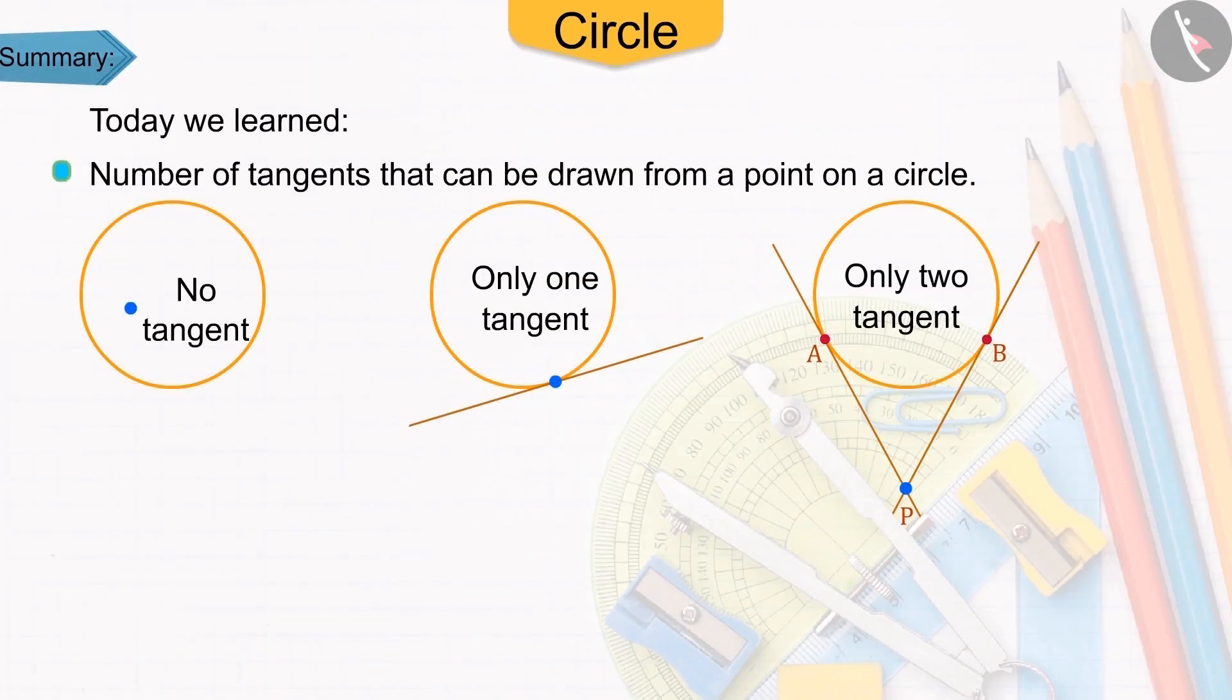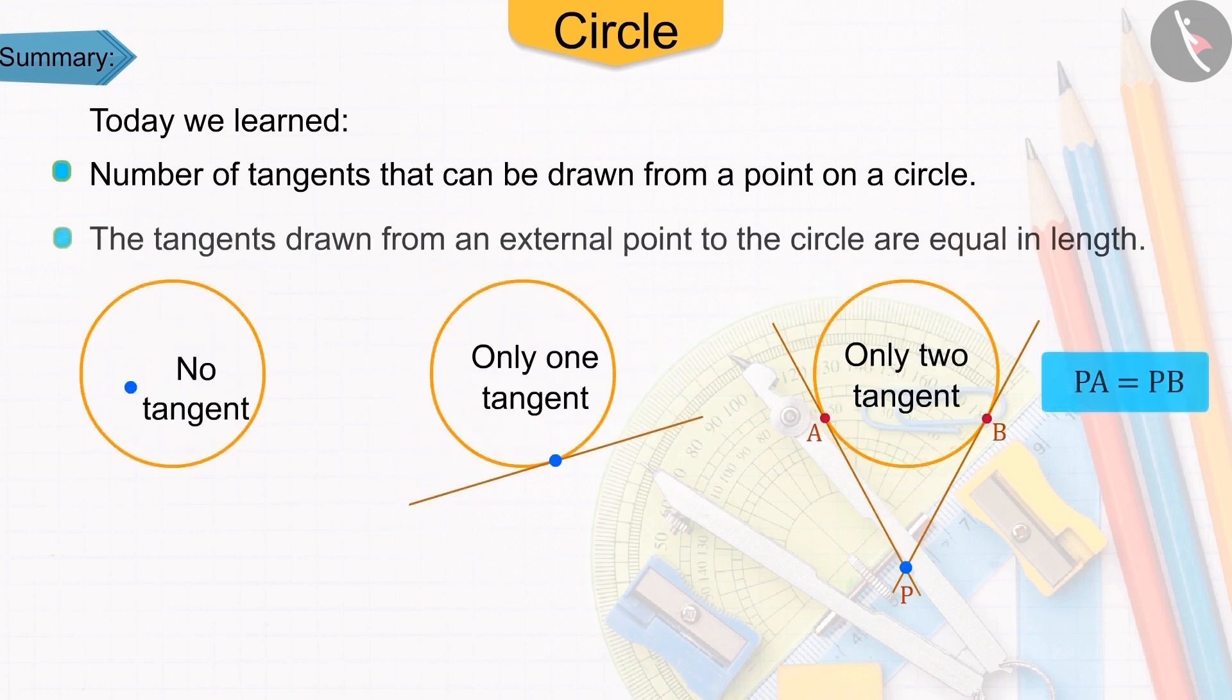Today, in this video, we learned about the number of tangents that can be drawn from a point on a circle. Also, we came to know that the tangents drawn from an external point to the circle are equal in length.